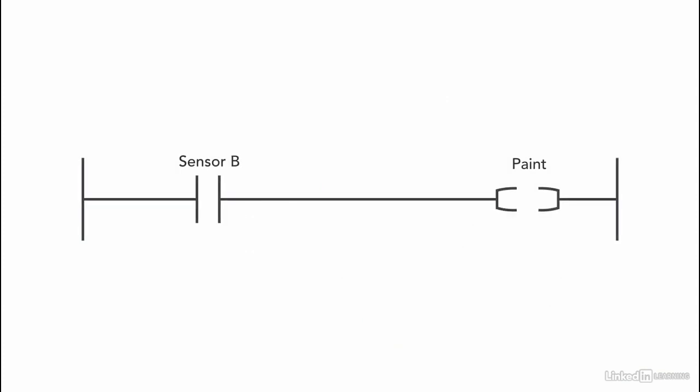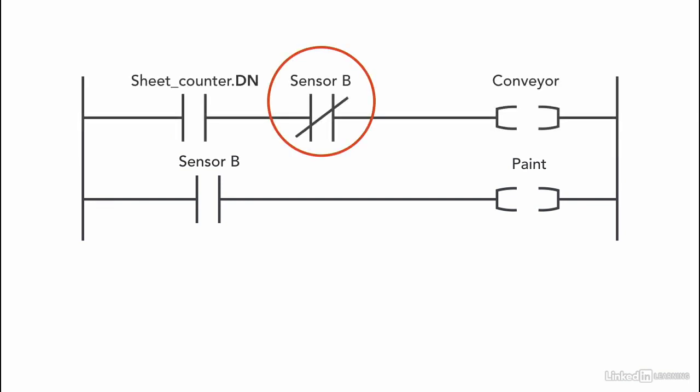To program that, we're going to use an XIC instruction for sensor B and then have the paint as an output. To have the conveyor stop at position B, remember that was achieved in the previous rung where the XIO instruction is used for sensor B. Once the sheet reaches position B, sensor B is activated, the XIO instruction turns to 1, and as a result, the conveyor stops.